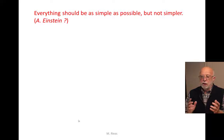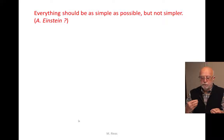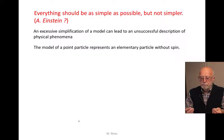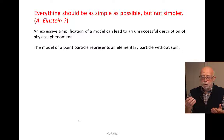One of the other sentences attributed to Albert Einstein is: 'Everything should be as simple as possible, but not simpler.' So if we have a model of a spinning electron and suppress the spin of the electron, we get simpler models like the point particle system. The point particle represents an elementary particle without spin. A further simplification will lead to an unsuccessful description of physical phenomena because we are suppressing an important mechanical property of the electron.